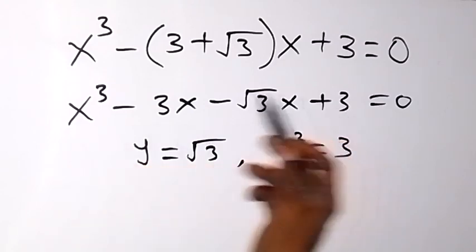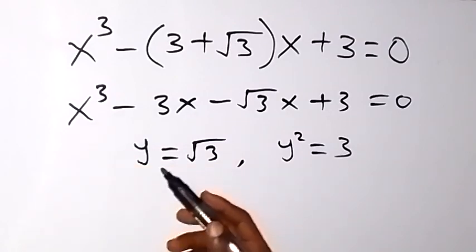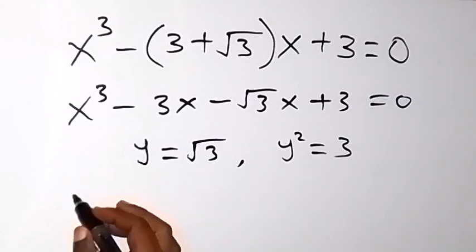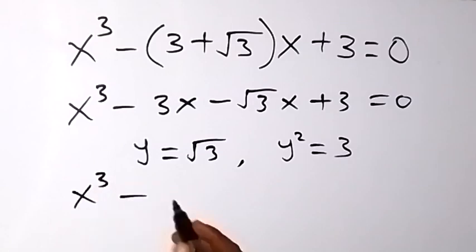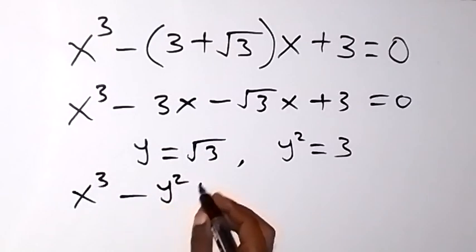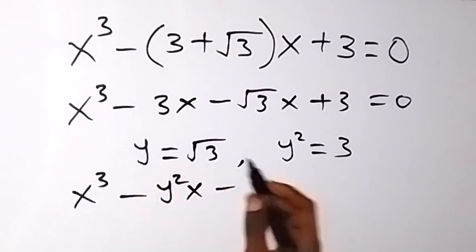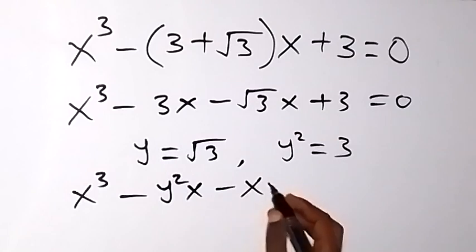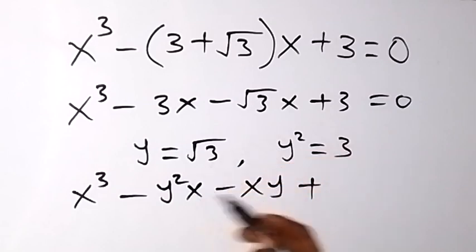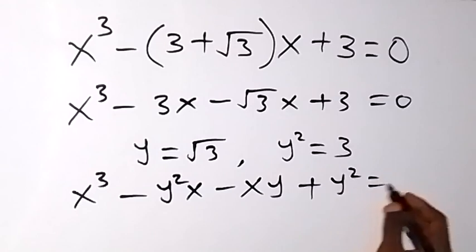So let's write this equation again now in terms of y. Instead of having root 3 and 3, we have y. So we have x raised to power 3, then minus 3 can be written as y squared. So we have y squared times x, then minus root 3 can be written as y, so that's y times x — that's xy — then plus root 3 can be written as y squared, so that's plus y squared, which is equals to 0.